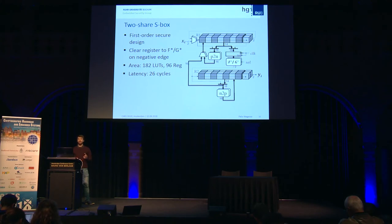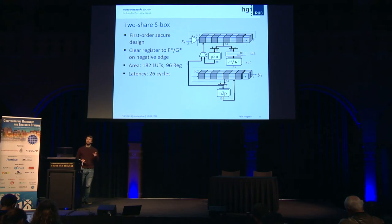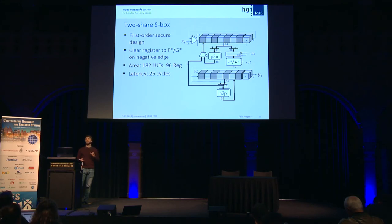From a security perspective, it is important to protect against transitional leakage because the input of the F-star G-star block gets the same input variables just rotated. It is very important to have a clearing register beforehand that clears on a negative clock edge to prevent leakage due to transitions between two clock cycles.